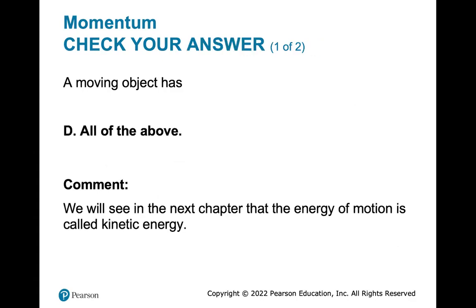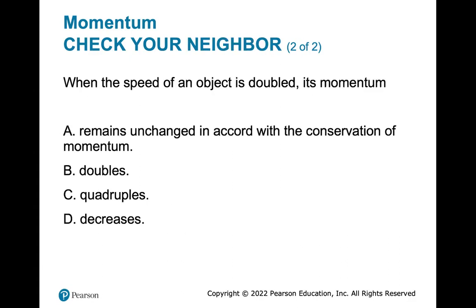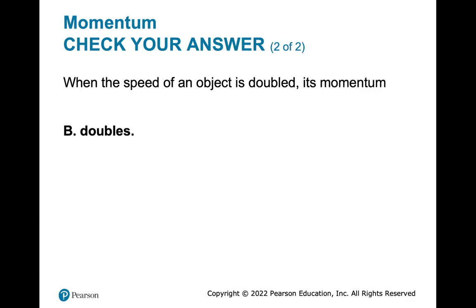A moving object does have momentum. It also has energy — we haven't covered energy yet, but we'll see that. Momentum is mass times velocity. We'll learn that kinetic energy is one-half times the mass times velocity squared, but we're not there yet. When the speed of an object is doubled, its momentum is directly proportional, so the momentum is going to be doubled.